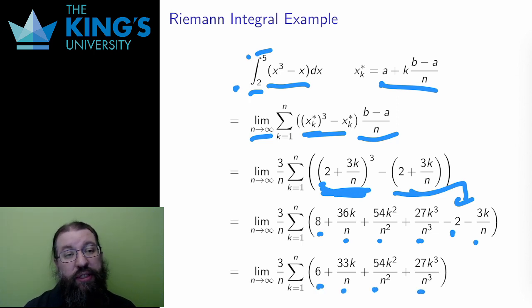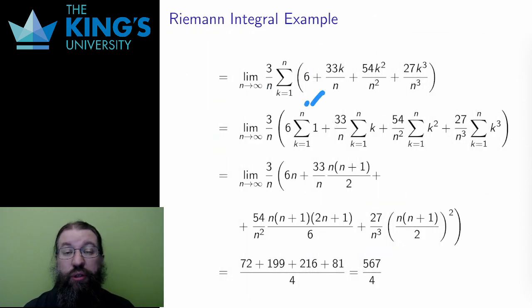Then I split the sum up into four pieces by linearity, pulling out the constants as I go. The result is four sums of 1, k, k squared, and k cubed. These were precisely the four special sums that I wrote down in the first video.